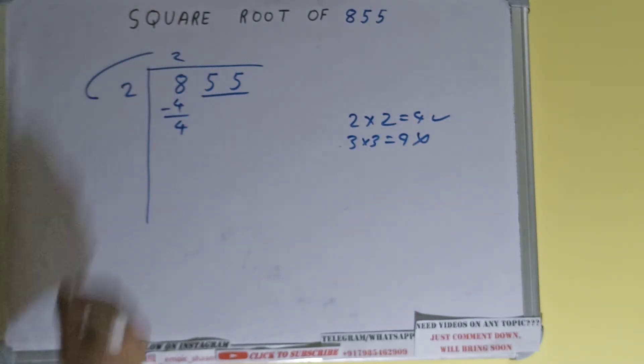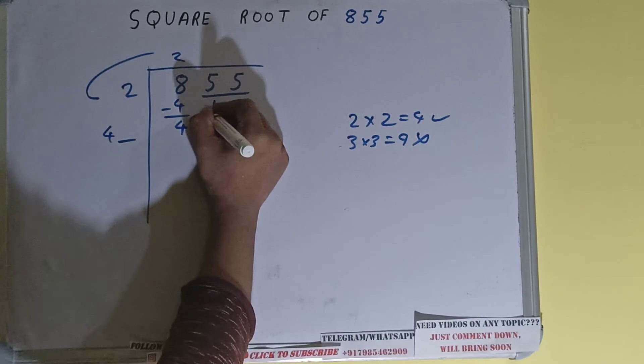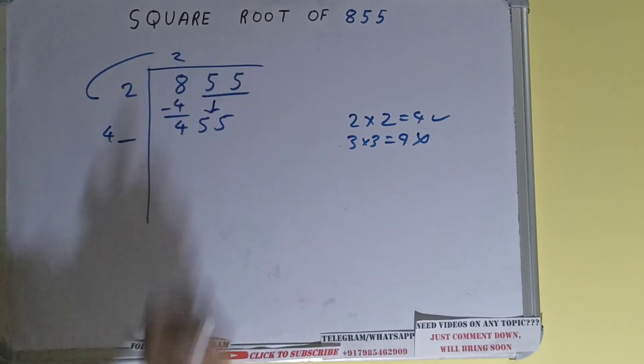Now we did 2 into 2, right? So do 2 plus 2, it will be 4, and keep one digit extra. And this number we need to make it big, so bring the next pair down and it will become 455.